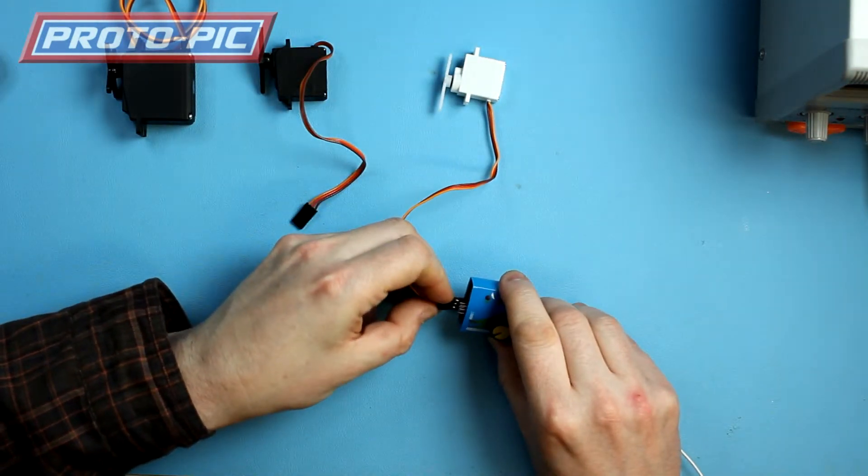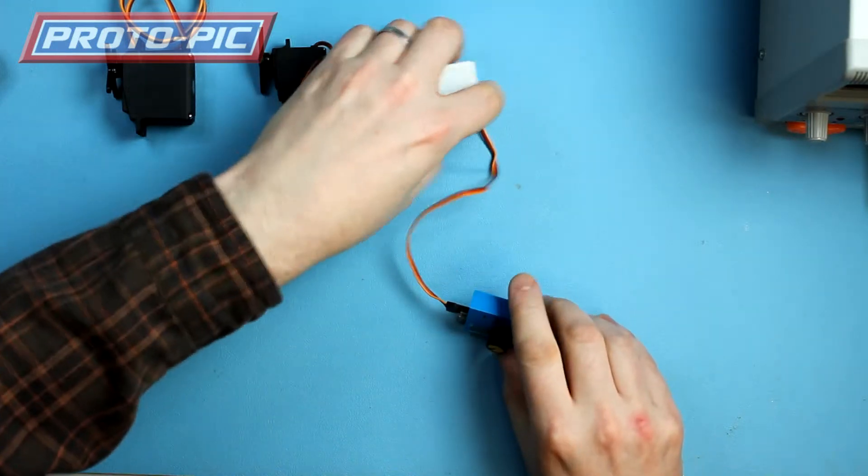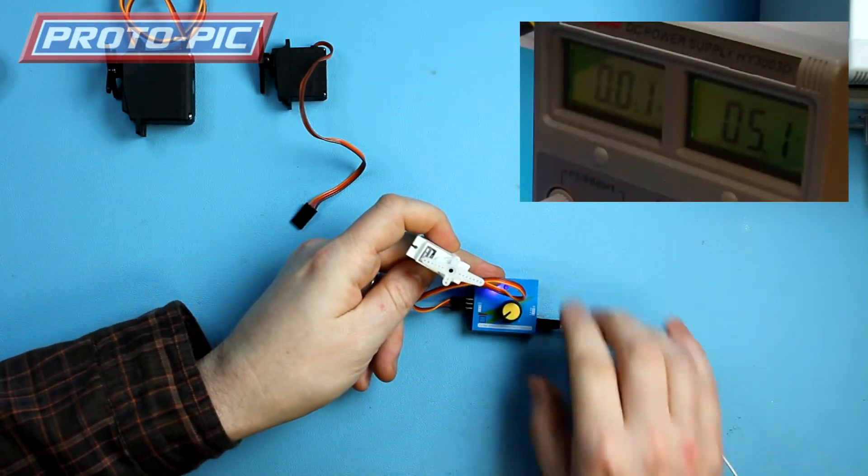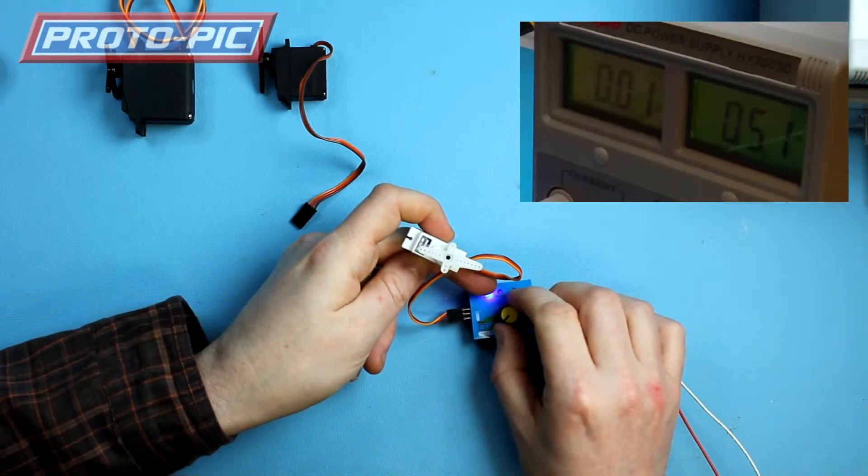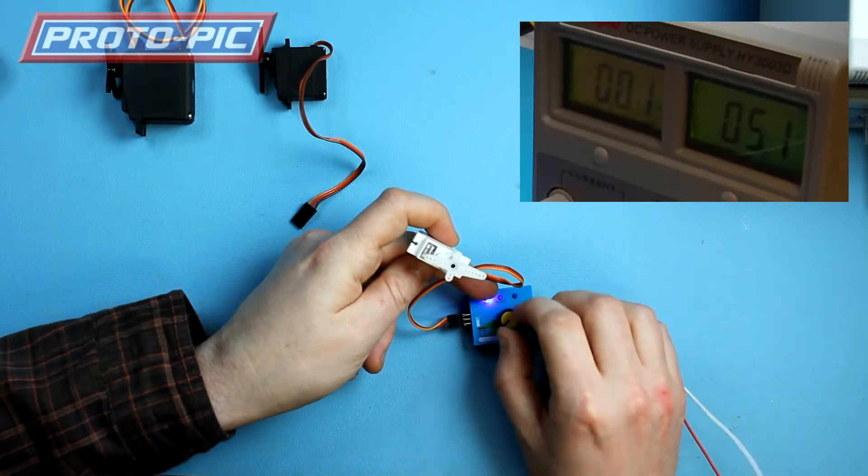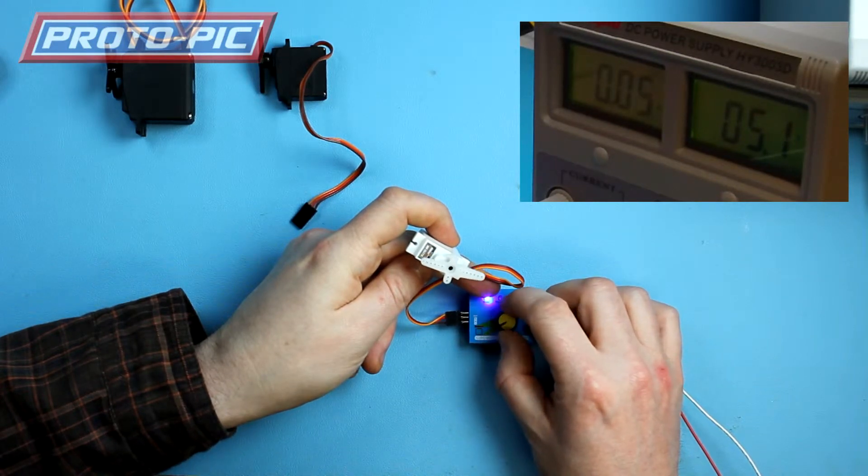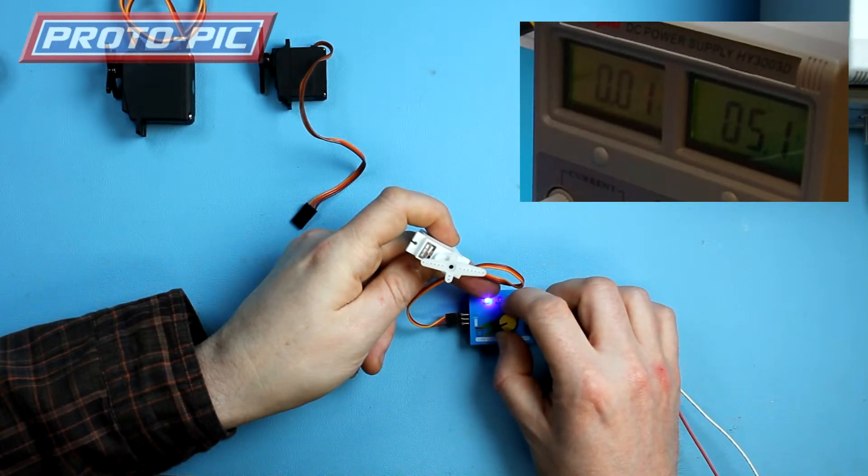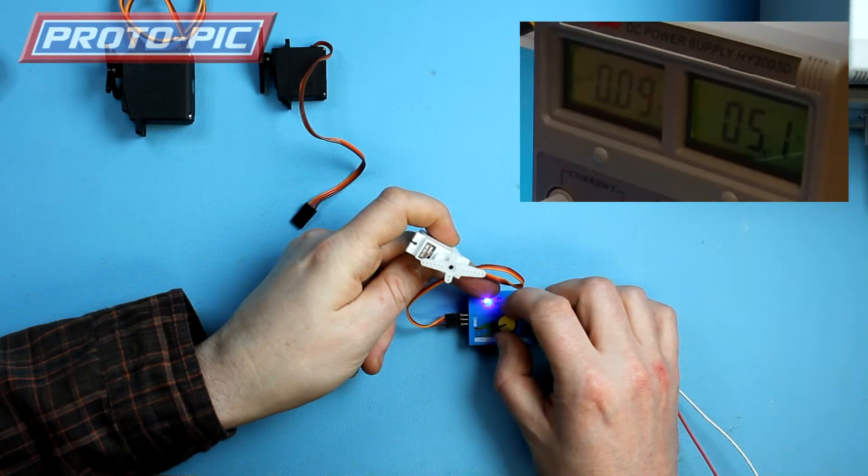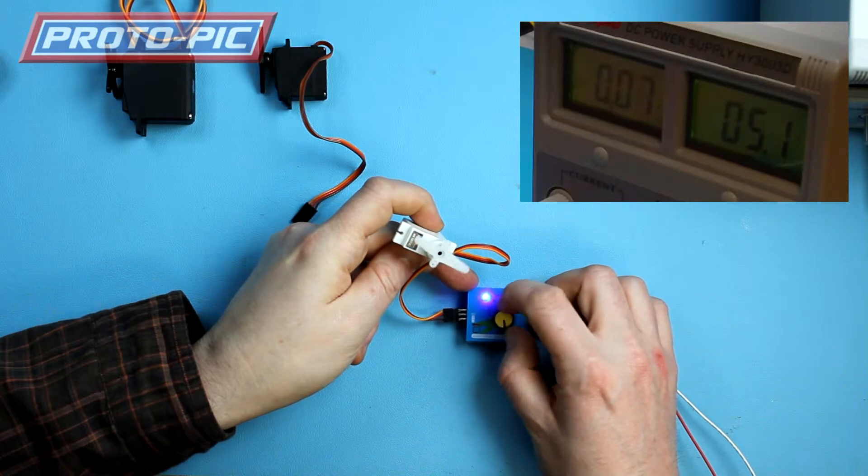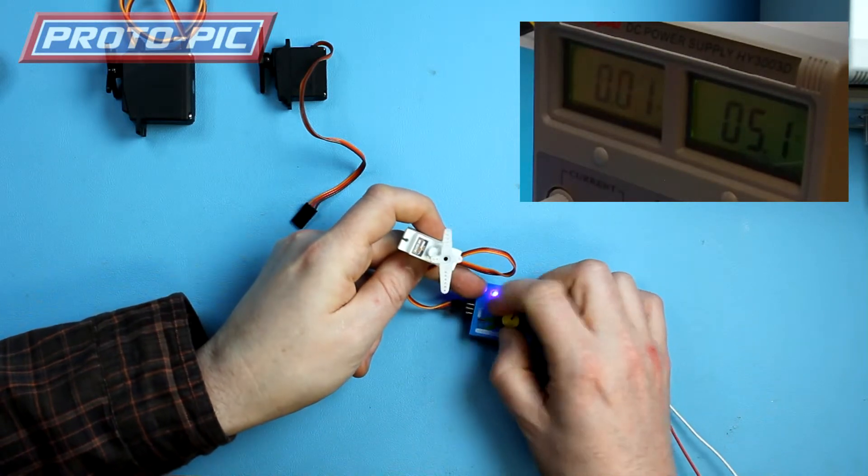So we'll start off with the small servo first. Just plug it in like that and I'll just set that up. Switch it on and it's drawing about 0.01 of an amp at the moment. And as I drive it back and forward it goes up to about 0.08, 0.09. And that's in manual mode. So you can see as I turn that knob it turns the servo.